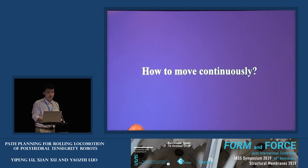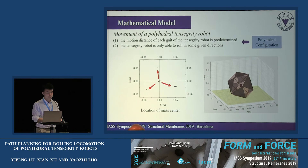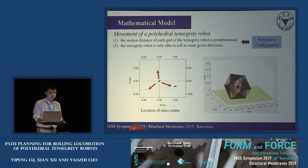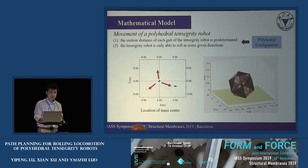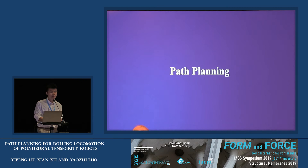After achieving rolling of one gait, the next problem is how to make the tensegrity robot move continuously. Due to the polyhedral configurations, the movement has the following properties: first, the motion distance of each gait is predetermined; second, the tensegrity robot can only roll in some given directions. Continuous locomotion is realized by successfully applying a number of given basic rolling gaits. In order to achieve continuous locomotion from a given start point to a target point, path planning is needed.